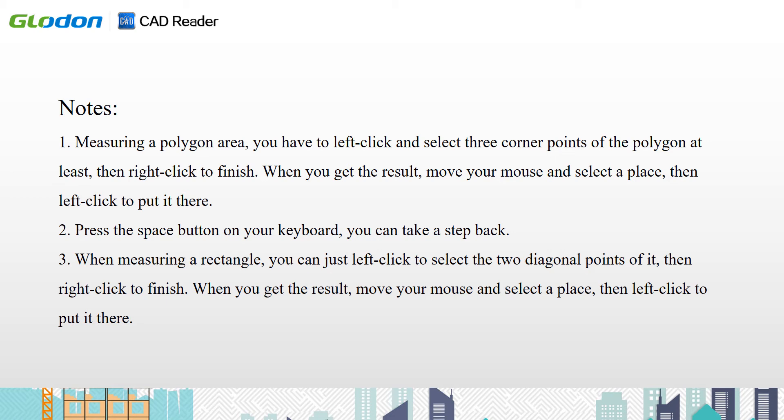When measuring a rectangle, you can just left click to select the two diagonal points of it, then right click to finish. When you get the result, move your mouse and select a place, then left click to put it there.